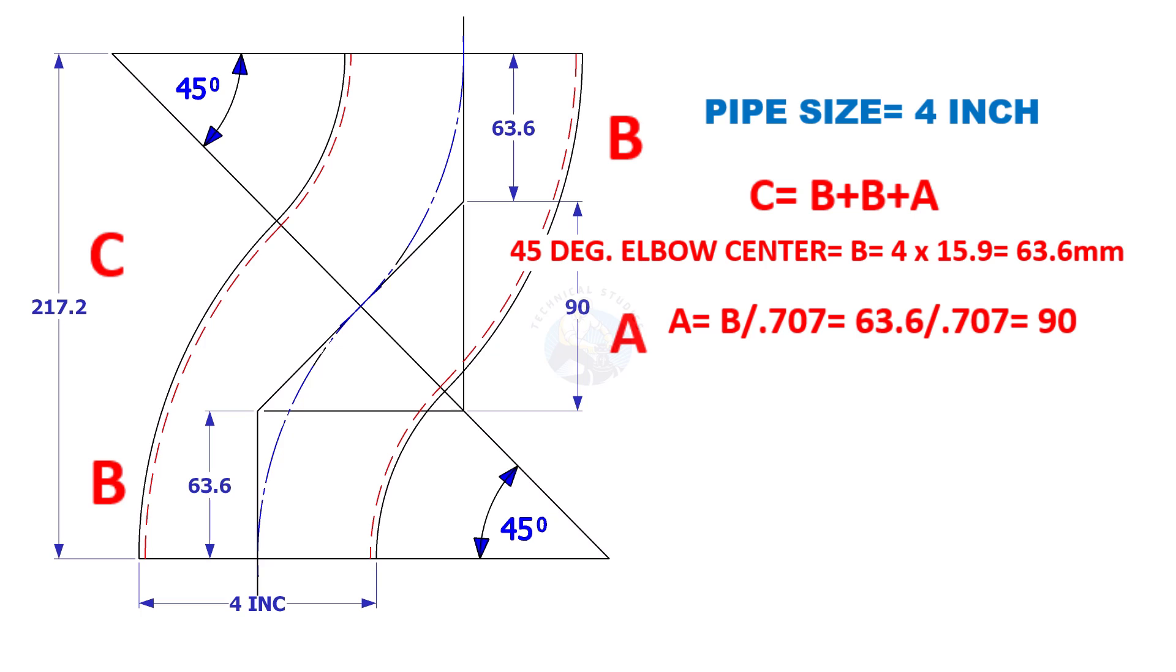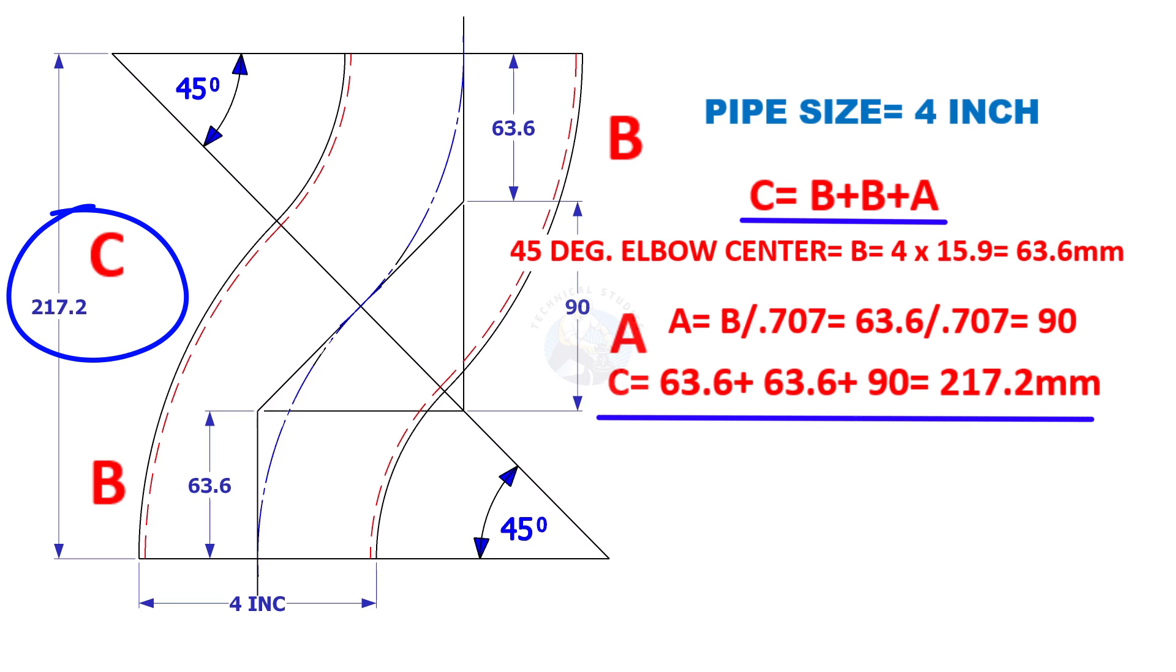The distance of A is B divided by 0.707, is 90 millimeters. Now, B plus B plus A is 217.2 millimeters.